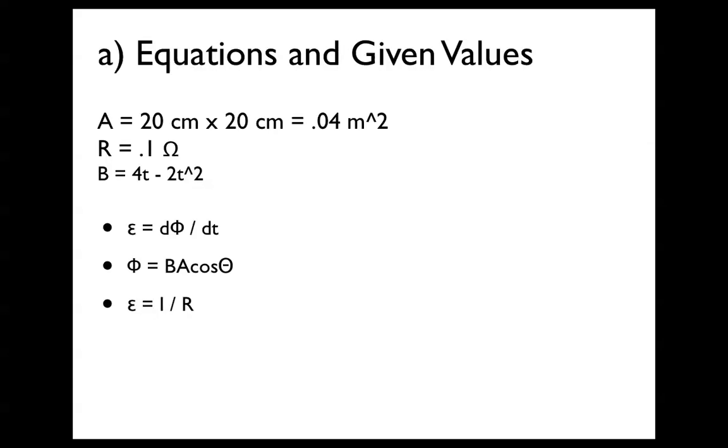First I'm going to list off the equations and given values that we're going to use for part A. Area is 20 cm by 20 cm, which equals 0.04 m squared. Resistance is 0.1 ohms. And B is a function of time, which is 4t minus 2t squared.